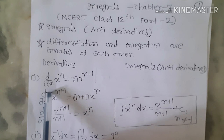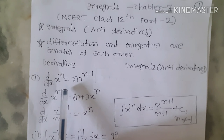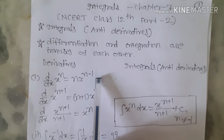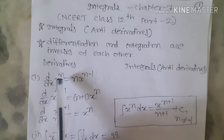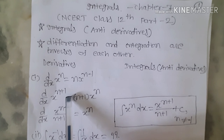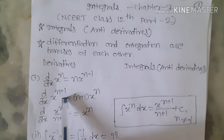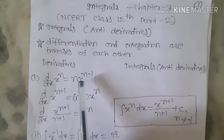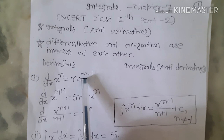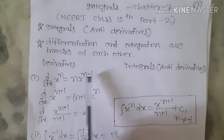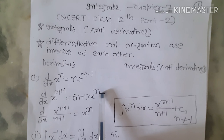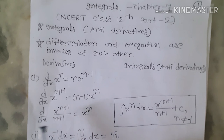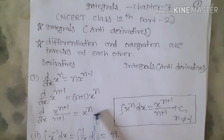We know that d/dx of x^n equals n·x^(n-1). Now we will put n+1 in place of n. So d/dx of x^(n+1) equals (n+1)·x^n. Cross-multiplying the (n+1), we get d/dx of x^(n+1)/(n+1) equals x^n.